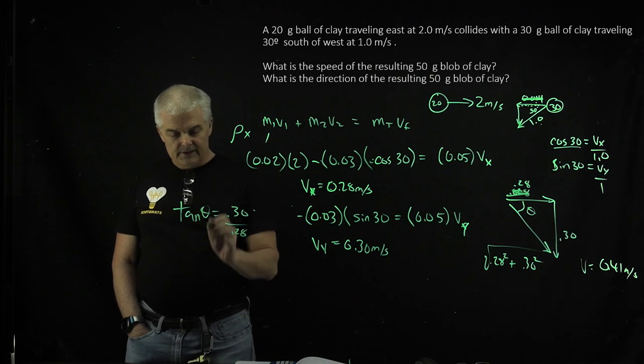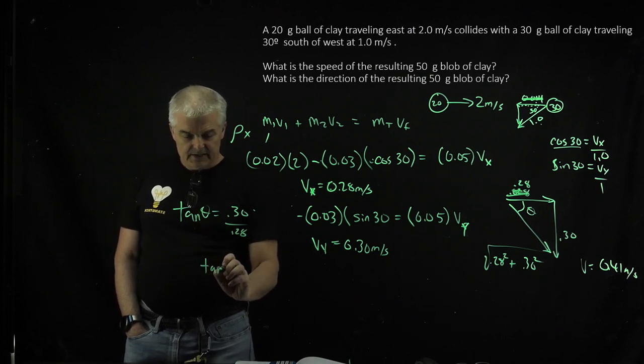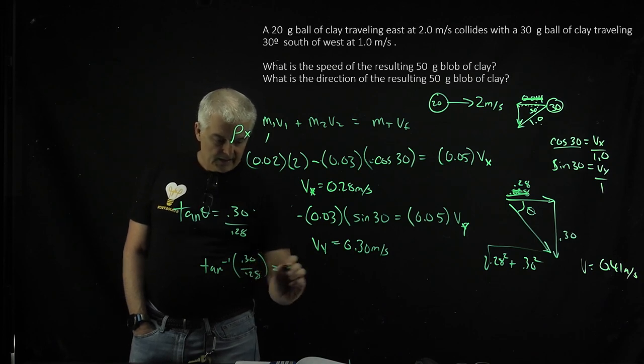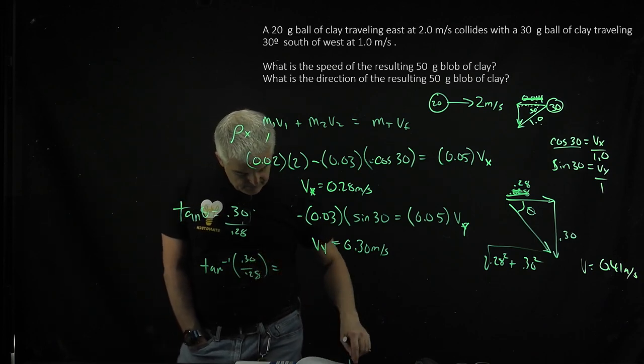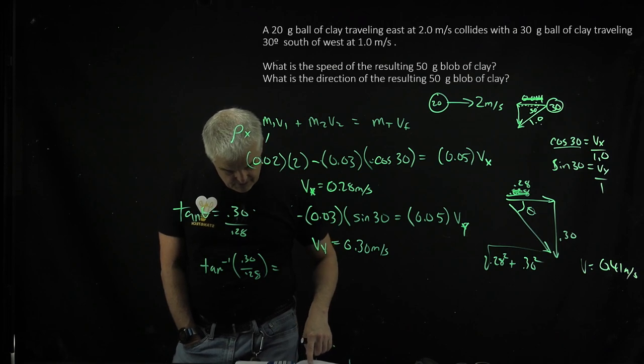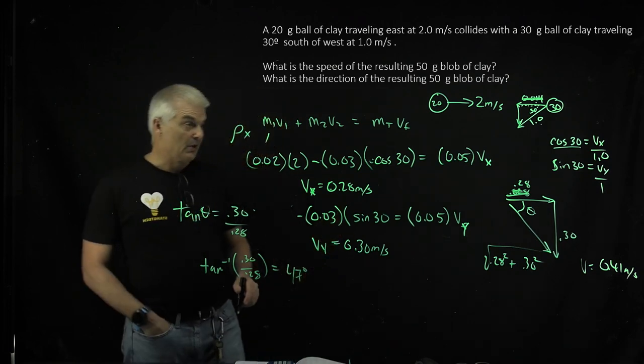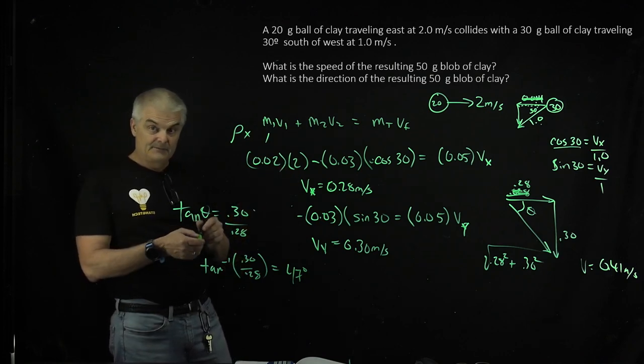You'll do an inverse tan on the calculator: tan⁻¹(0.30/0.28). The calculator gives me the angle, which is 47 degrees. It's a long problem. Houston, we know a problem.